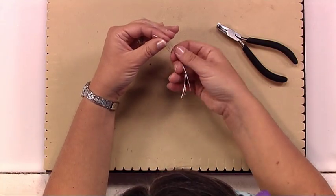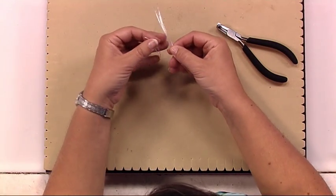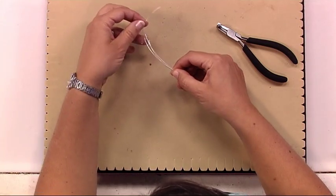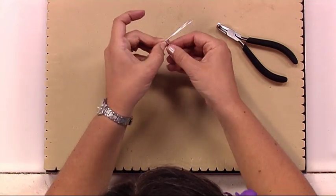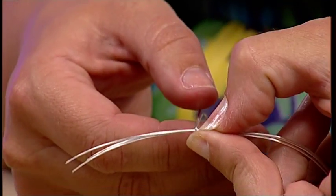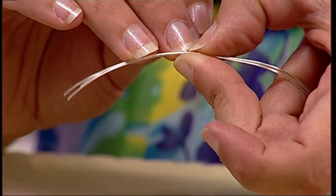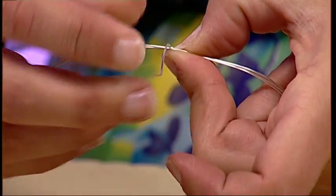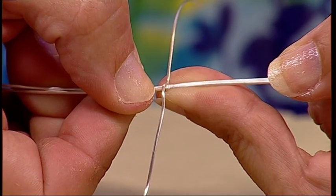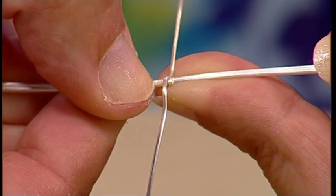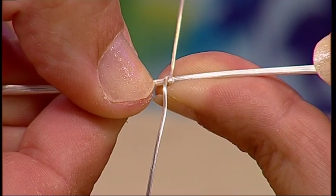This allows me to take my other wires, thread them through, and then create a perfect wrap around my wires. And that's how you use your wire banding pliers.